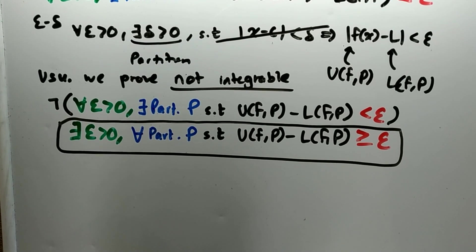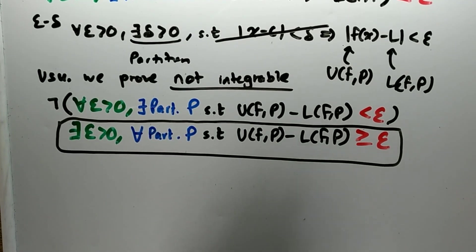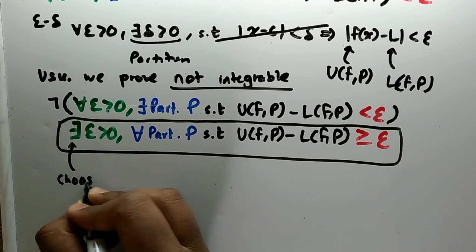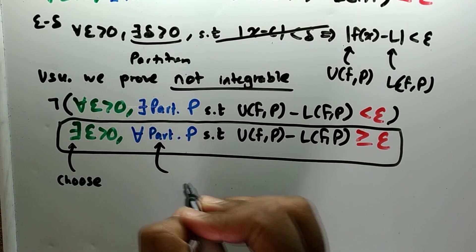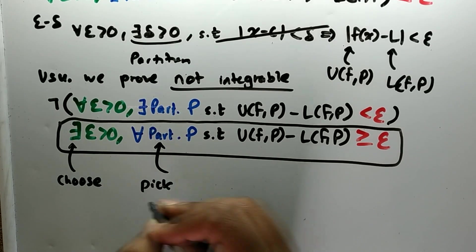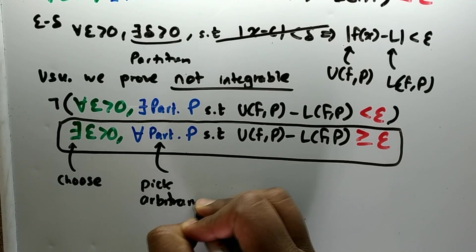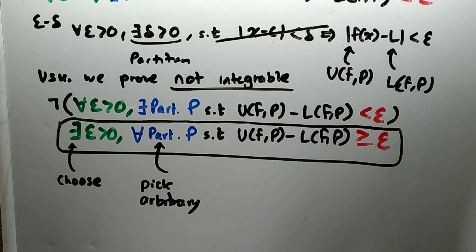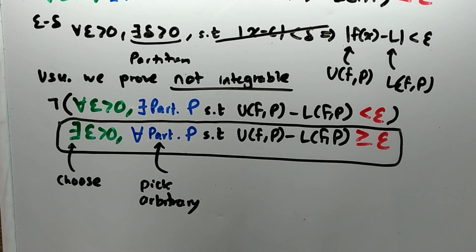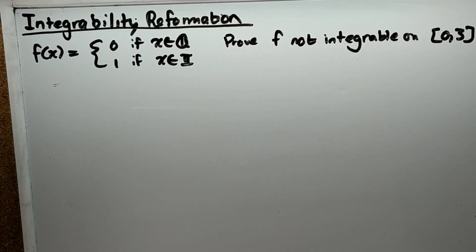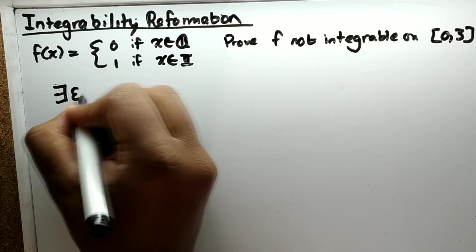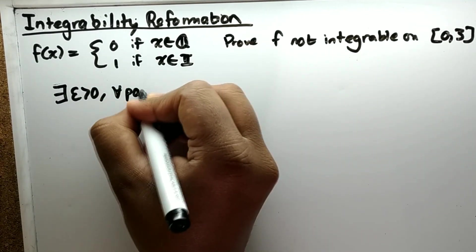Since we have 'there exists epsilon,' we can choose a specific epsilon. Since 'for all partitions' appears, we let the partition be arbitrary. The general rule is: if you see 'for all,' let it be arbitrary; if you see 'there exists,' choose a specific value. To showcase IR, let's use the previous example again.